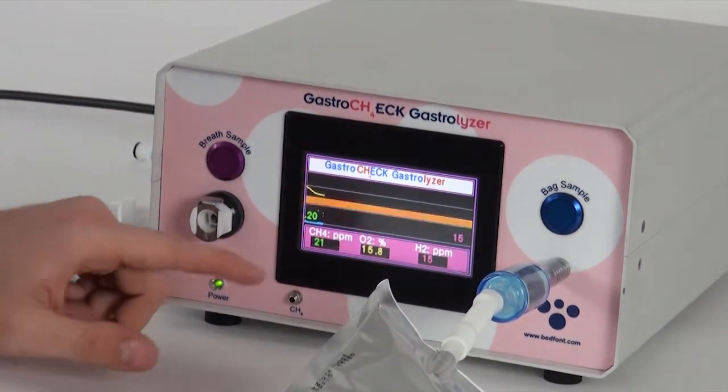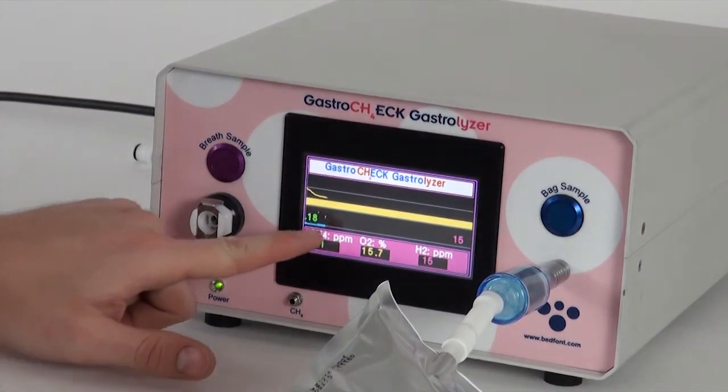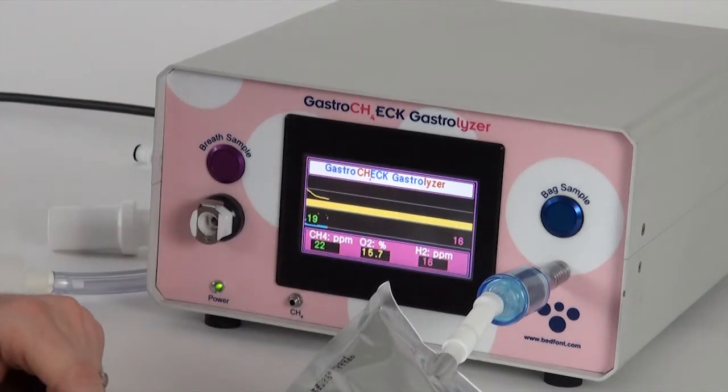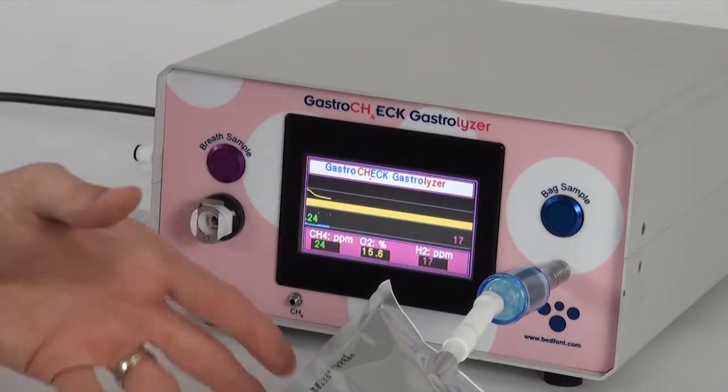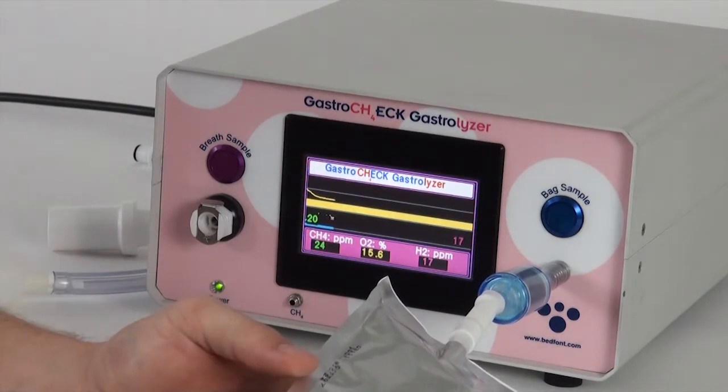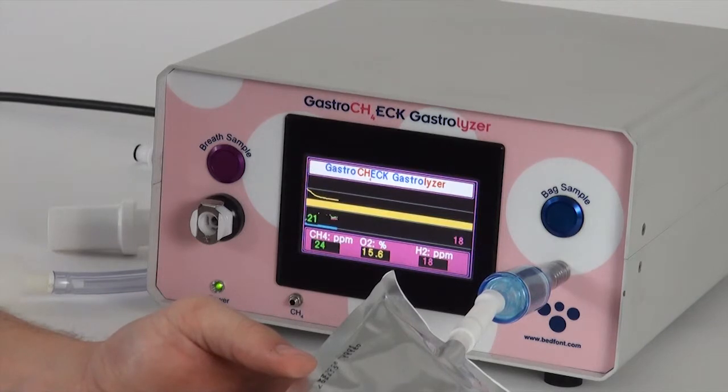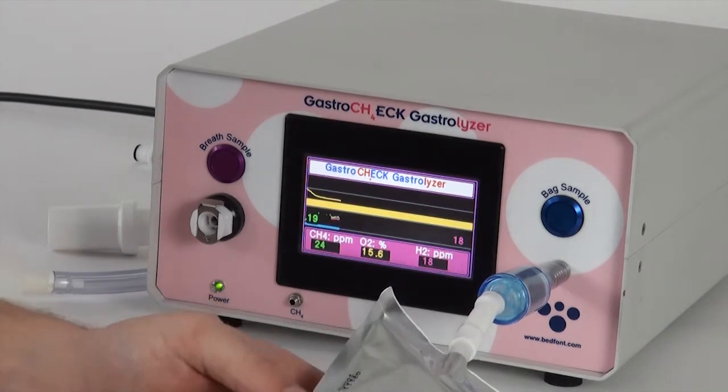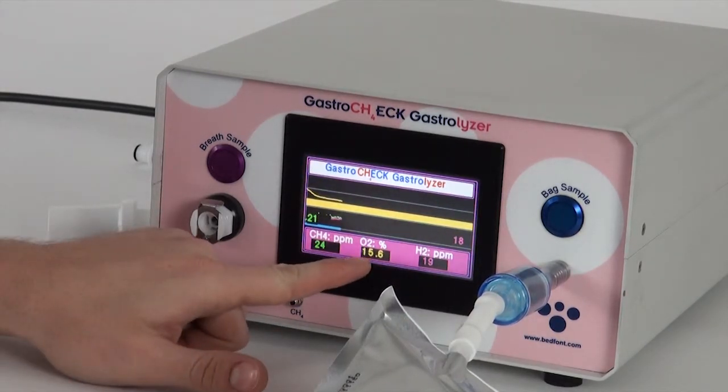So the sample's now started. You can see the bar on the screen there which is showing how good the end-tidal sample is and the CH4 values and the H2 values on there as well. The monitor will draw the sample from the bag itself so there's no need to squeeze the bag or anything like that. The pump will take as much sample as it needs in order to do the calculation.